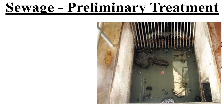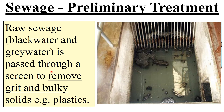So this is preliminary treatment. You have the raw sewage — that's the black water down the toilet and the grey water from down the sinks. It goes through a screen. Anything that's ended up in the sewers which shouldn't be there — and there is quite a lot. We'll watch a video later about what happens when people put oil down their sinks. The screen removes grit and bulky solids as well, things like plastics.